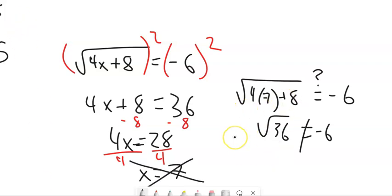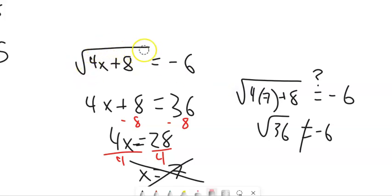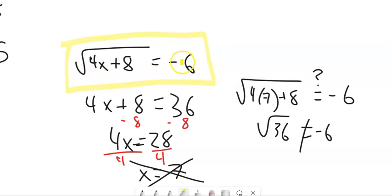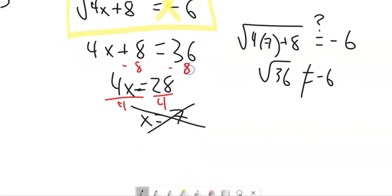And if you go back to our original statement, you can see what went wrong. We're trying to make the square root of something give a negative answer. Square root only spits out positive answers. So one thing to think about with these problems is: if you ever have the square root equals a negative, right away drop out and just go straight to no solution. And there is no solution to that.